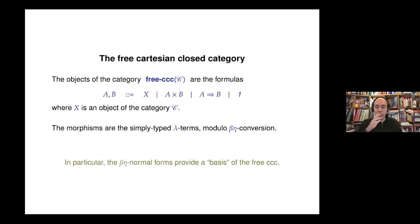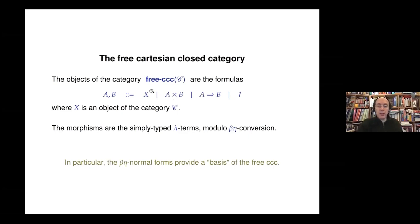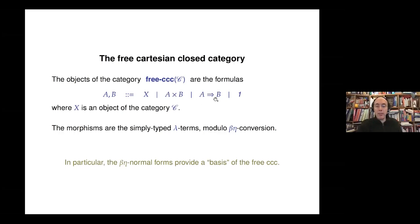If we want to construct the free cartesian closed category, we start from a category and the objects should be constructed from the original objects together with products and implications. So the objects of the free cartesian closed category are constructed by a grammar of types: you can think of them as formulas or types built with cartesian product and implication — cartesian product understood as conjunction and implication as a function space.